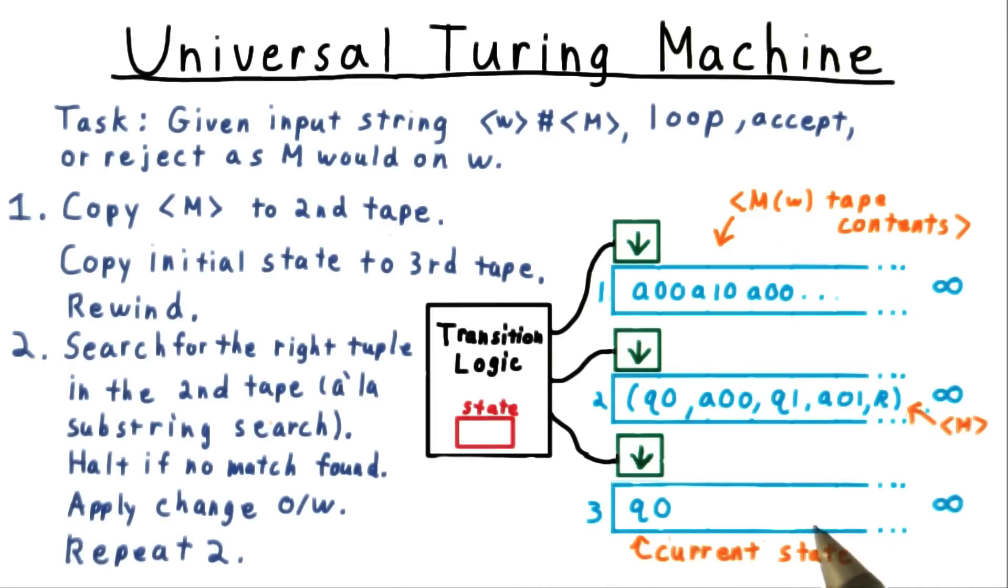If there is a match, however, then we apply the changes to the first tape, moving the head to the right position, and so forth, and then repeat this process. So actually, interpreting a Turing machine description is surprisingly easy.